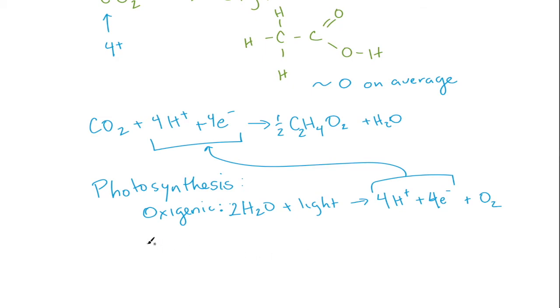There are other types of photosynthesis. For example, photosynthesis can oxidize sulfide. In this particular case, sulfide plus light goes to elemental sulfur plus 2 protons. That's half as many in that process.